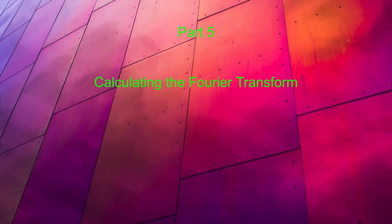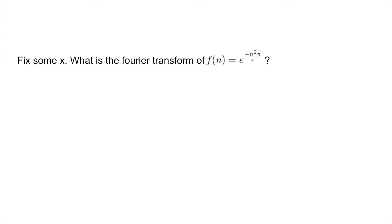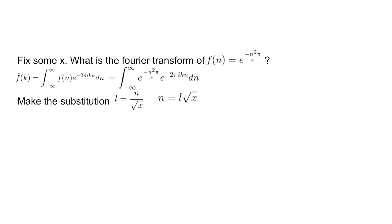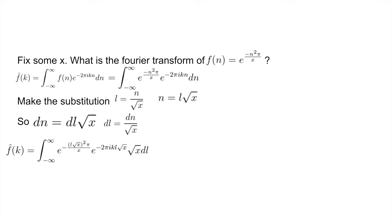Let's fix some value of x. The Fourier transform of f of n equals e to the negative n squared pi over x is, by definition, the integral from negative infinity to infinity of f of n times e to the negative 2 pi ikn dn. Plugging in our definition of f and making the substitution l equal to n divided by the square root of x, so dl equals dn divided by the square root of x, we get f-hat equal to the integral from negative infinity to infinity of e to the power of negative l root x squared pi over x, times e to the negative 2 pi ikl root x, times dl root x.